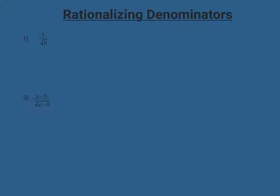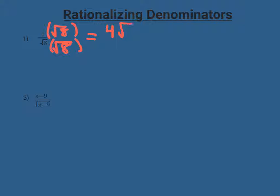If you have a monomial denominator like we have in number one, to get rid of the radical, the easiest way is to multiply the top and bottom of the fraction by the radical itself. So I'm going to multiply the top and bottom of this fraction by radical 8. On the top I'm left with 4 radical 8, and on the bottom radical 8 times radical 8 is radical 64, which simplifies to 8. Remember, if you're multiplying two radicals that have the same number under them, it's just equal to that number.